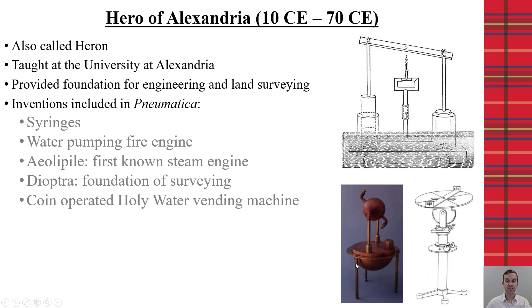The aeolipile was a form of a steam engine that hadn't been constructed before, although it's not the foundations of how we make steam engines now. And then the dioptra here was used to actually do land surveying. And then the other cool thing he made was a coin-operated vending machine that would dispense holy water for the people.